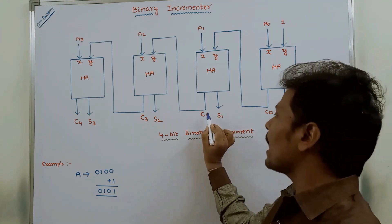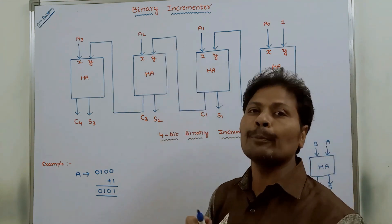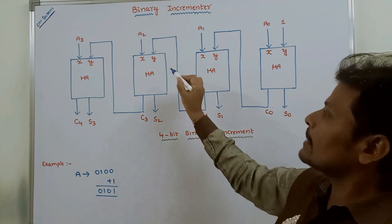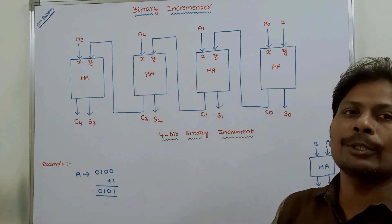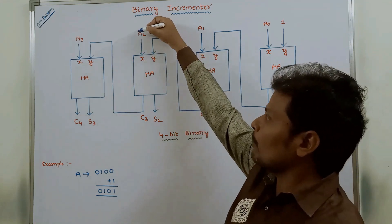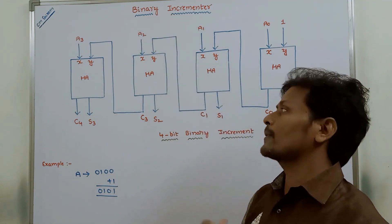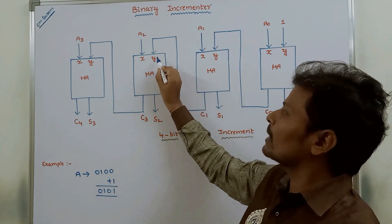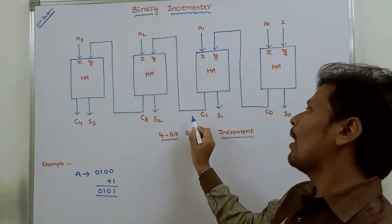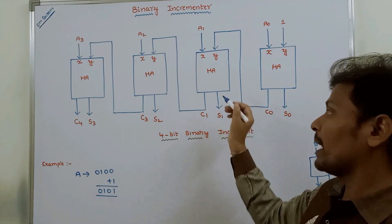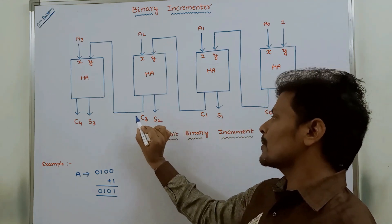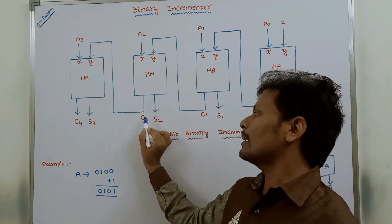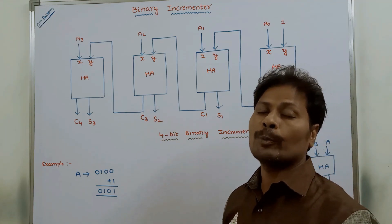This carry output can be given as one of the inputs of the next higher half adder. That half adder can take two inputs: A2 at the X input, and the carry output of the previous half adder at the Y input. It can produce two outputs: S2 and carry output C3.